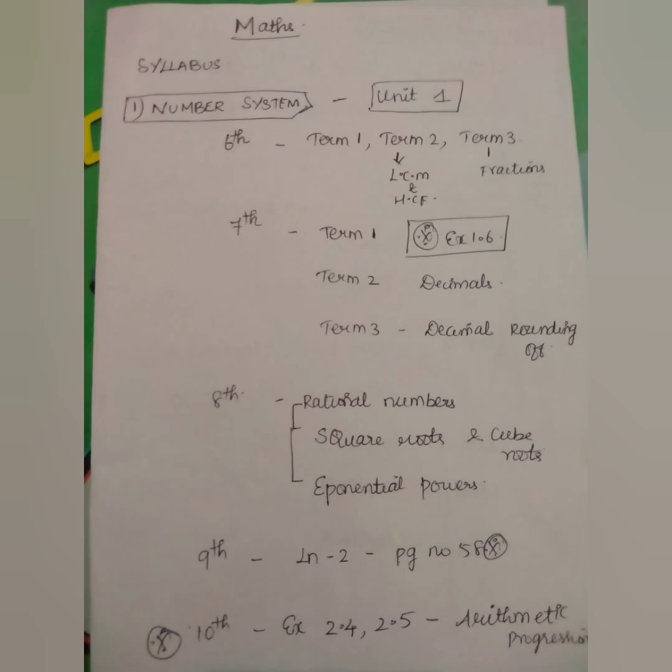In the number system, the number system is in the 6th and 10th book. This is my point of view. 6th standard has term 1, term 2, term 3 — three terms. Term 1 is general numbers. Term 2 is LCM and HCF. This is the syllabus. The number system is connected to LCM and HCF. If you are aware of LCM and HCF, you will see term 2. I will see the number system now.